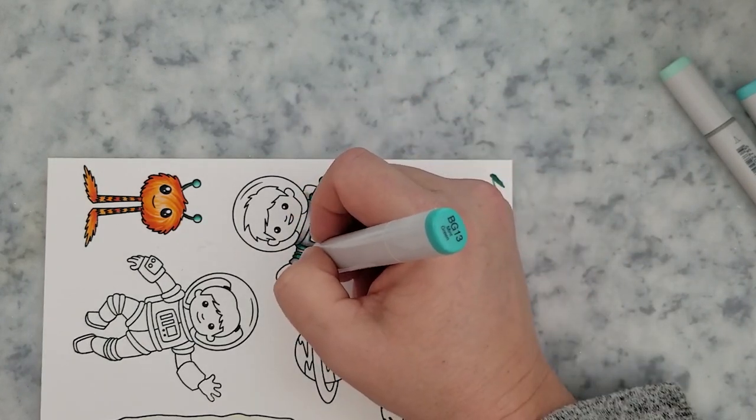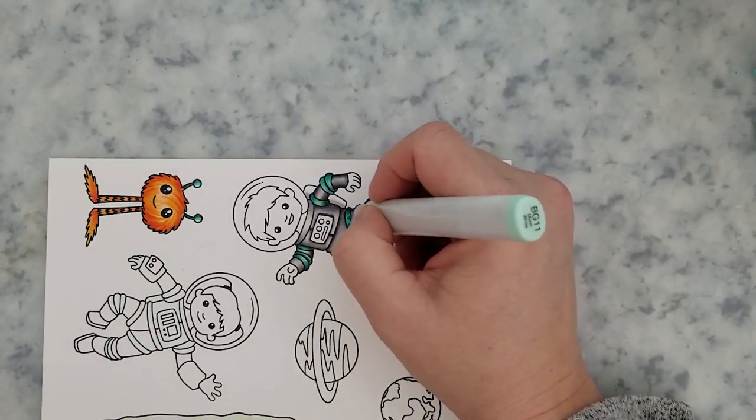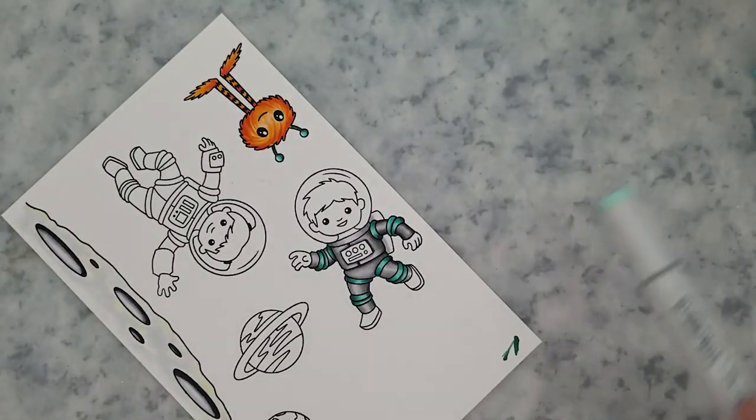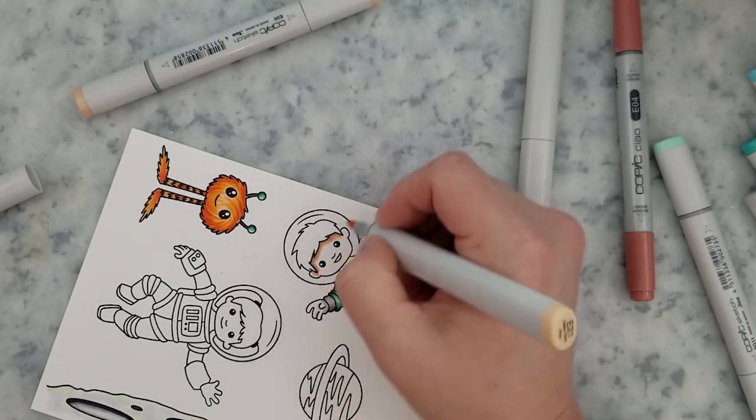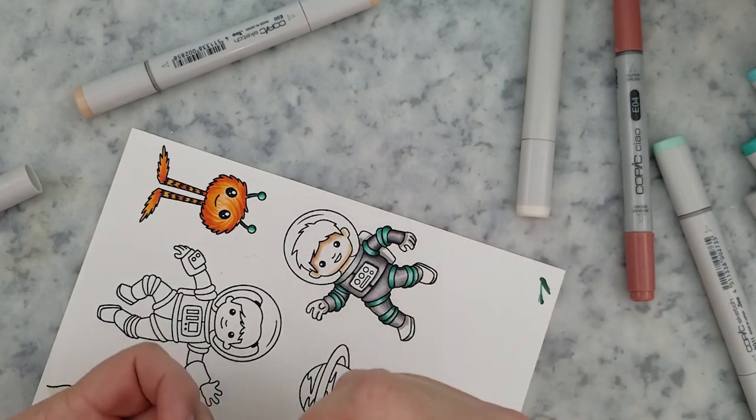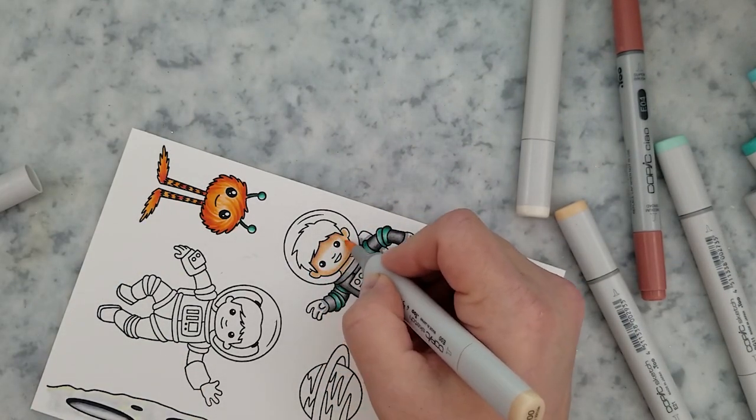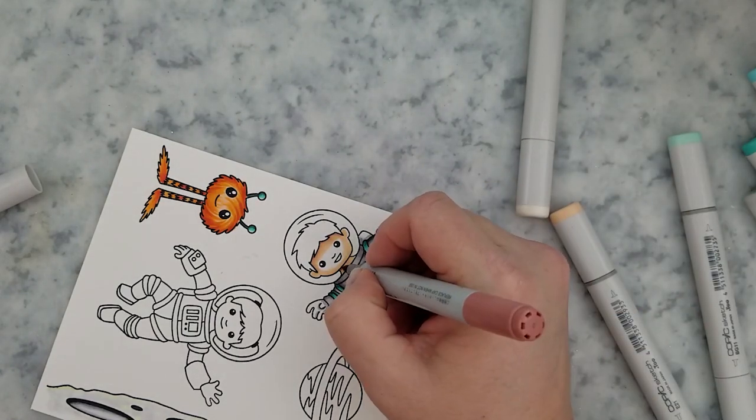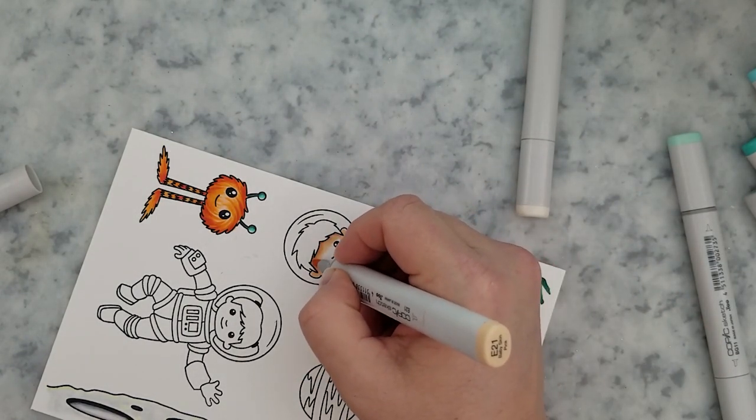So next for his face, I'm going to come in with E04 right around his hairline and add a little bit of depth there. I follow that with E21 and then E00 and E000. Again, just your basic coloring here with blending.